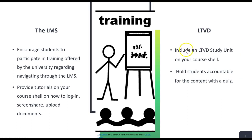For the LTVD, you want to include an LTVD study unit on your course shell and hold students accountable for the content by requiring them to take a quiz. In my LTVD class, that quiz is worth 100 points out of a thousand, so it weighs heavily and they take it more seriously. The quiz includes short answer questions, multiple choice, and higher-order thinking questions — asking things like what time they're supposed to log on, components of cooperative learning, and why this method is good for an online course.